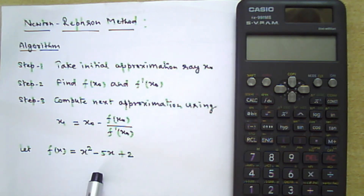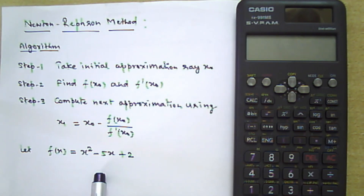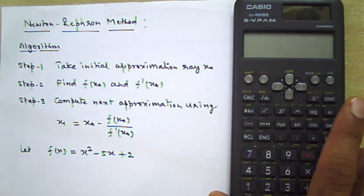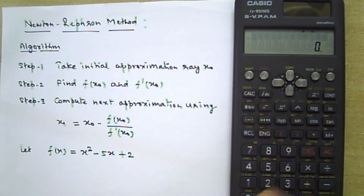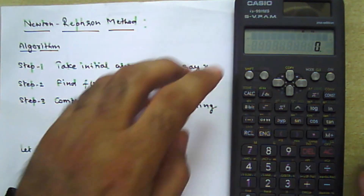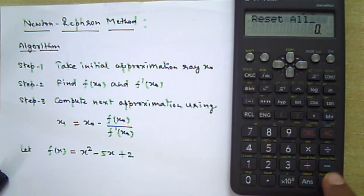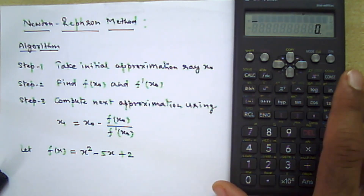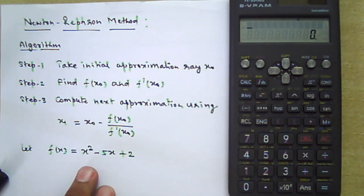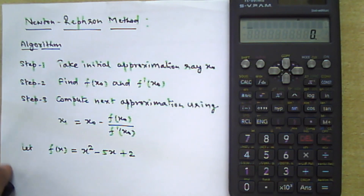Suppose we have a function f(x) = x² - 5x + 2 and we want to find the approximation using the Newton-Raphson method. First, on the calculator, you should always have the habit of resetting the memory first. To reset the memory, press Shift, then Mode, then 3, then equals sign twice, then 1, then 2. Now the memory is reset.